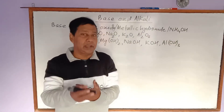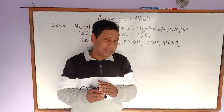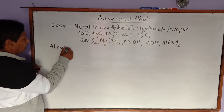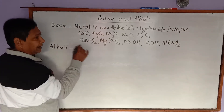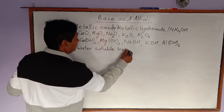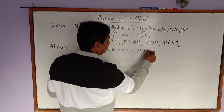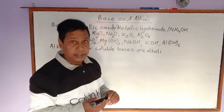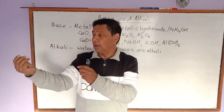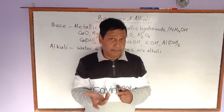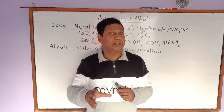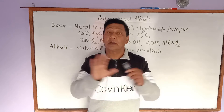Now, what is an alkali? Alkalis are water-soluble bases. So the definition is: all water-soluble bases are called alkalis. Among the many bases that exist, some dissolve in water and some do not. The bases which dissolve in water are called alkalis.